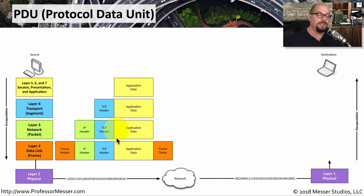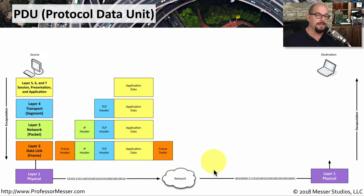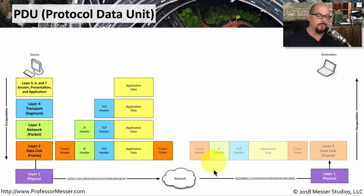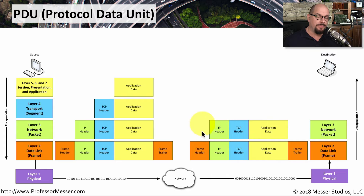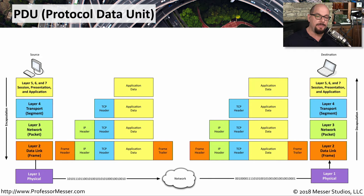We're also going to need to put MAC addresses, so we put a Layer 2 data link frame around all of that, and then we send it down to Layer 1 and send it across the network. When that frame arrives on the other end of the network, we've got this Layer 2 data link frame, and now we need to strip off the frame header, the IP header, and the TCP header to finally get back to the application PDU for the destination device.